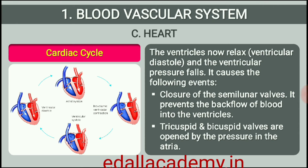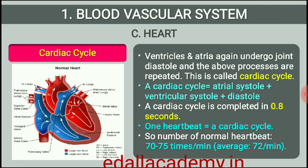As the ventricular pressure declines further, the tricuspid and bicuspid valves are pushed open by the pressure in the atria exerted by the blood which was being emptied into them by the veins. The blood now once again moves freely to the ventricles. The ventricles and atria are now again in a relaxed, joint diastole state as earlier. Soon the SAN generates a new action potential and the events described above are repeated. This sequential event in the heart which is cyclically repeated is called the cardiac cycle and it consists of systole and diastole of both the atria and ventricles. The heart beats 72 times per minute, that is, that many cardiac cycles are performed per minute.